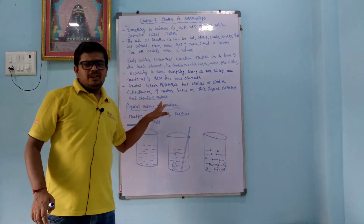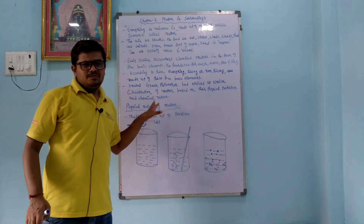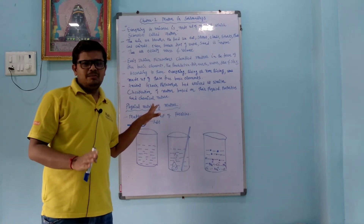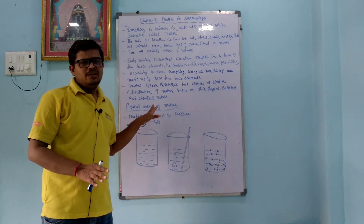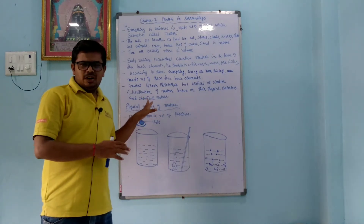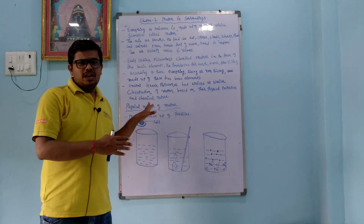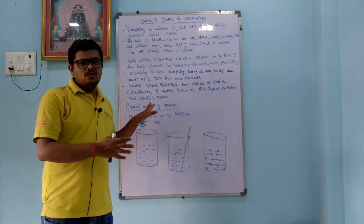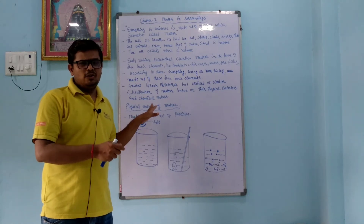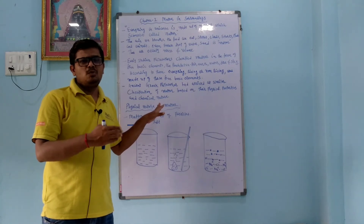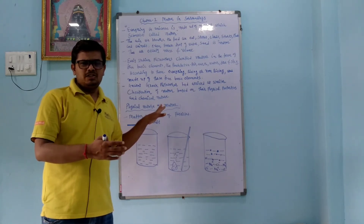Regarding the chemical nature of matter, we can include elements, compounds, and mixtures. An element is a substance made up of the same kind of atoms. A compound is a substance made up of two or more types of atoms, and the smallest part of a compound is called a molecule.